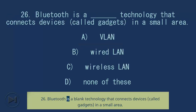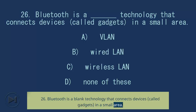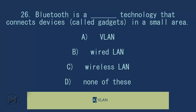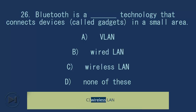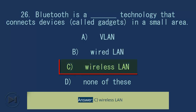Question 26: Bluetooth is a blank technology that connects devices, called gadgets, in a small area. A. VLAN, B. Wired LAN, C. Wireless LAN, D. None of these. Answer: C. Wireless LAN.